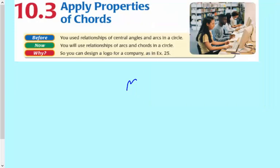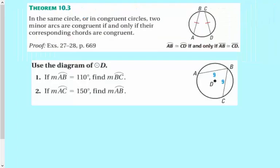As I mentioned, we're going to be working with chords and arcs in a circle. First theorem: it says that in the same circle or in congruent circles, two minor arcs are congruent if and only if their corresponding chords are congruent. So if the two chords are congruent, then the two arcs are congruent and vice versa.